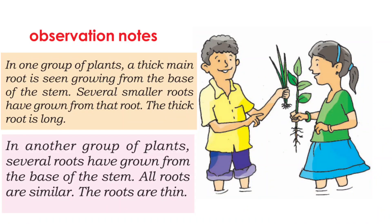Students, observe this picture. There is one boy and one girl, and in their hands are two different types of plants. What is the difference between these plants? One plant has a thick main root growing from the base of the stem, with several smaller roots growing from that thick root.